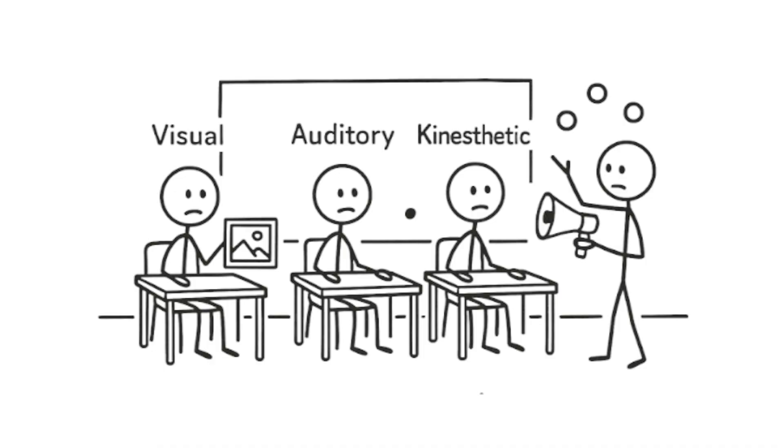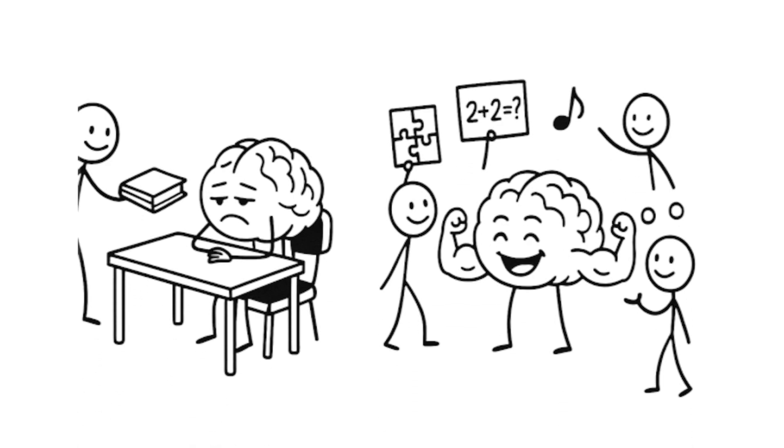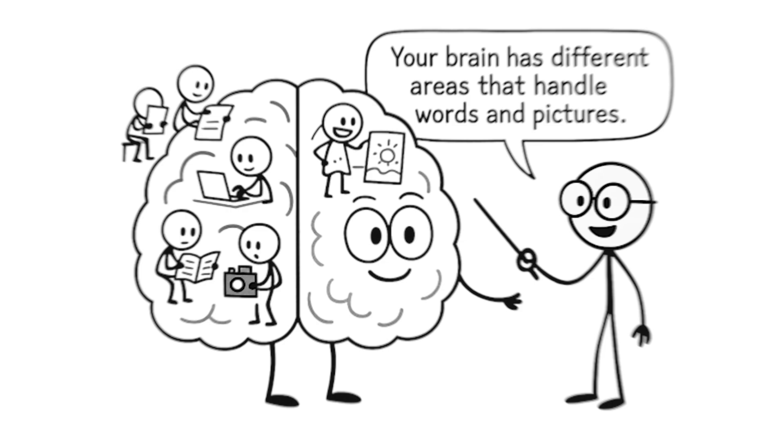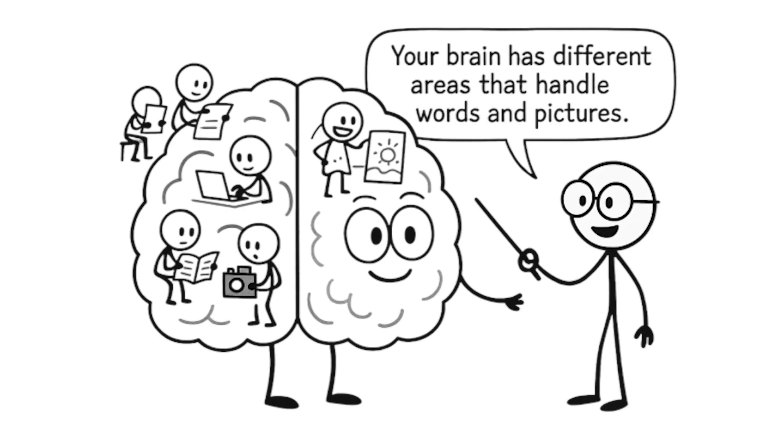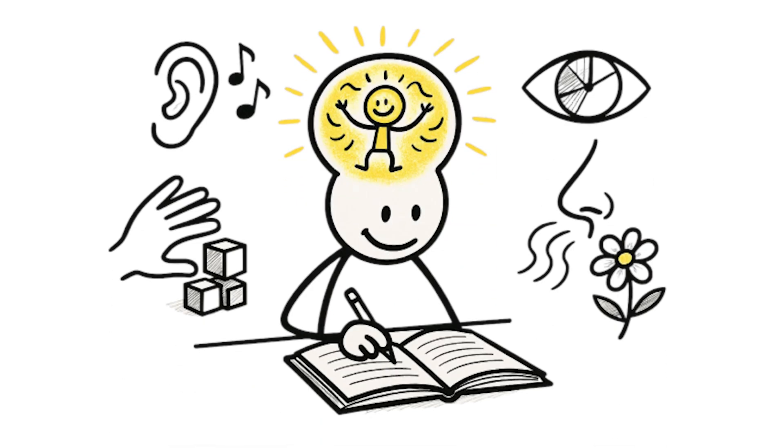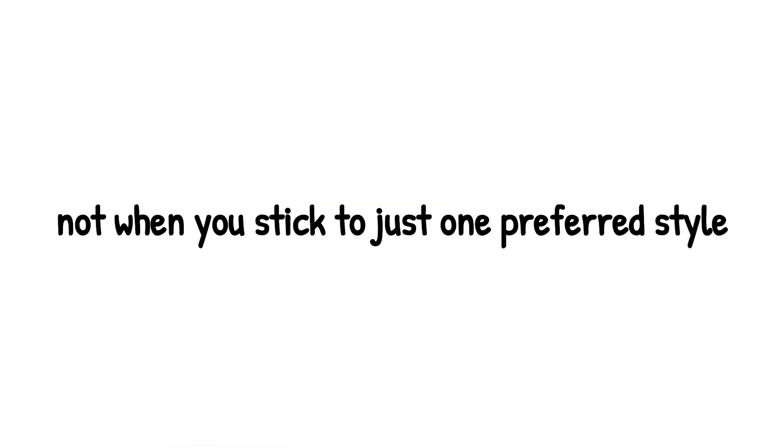Students don't perform better when lessons match their supposed style. What your brain actually needs is challenge and variety. Mixing things up forces your brain to work harder and remember better. Think of it like this. Your brain has different areas that handle words and pictures. When you read about how rain forms while looking at a diagram, both areas team up and create stronger memories with more ways to remember stuff later. The best learning happens when you use multiple senses together, not when you stick to just one preferred style.